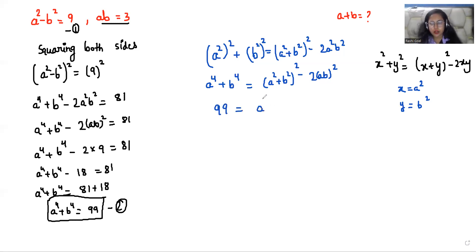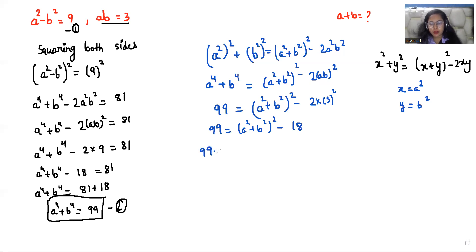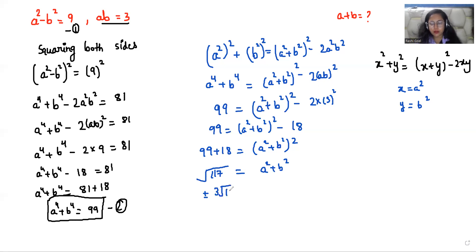I can replace a power 4 plus b power 4 with 99. So 99 is equal to a squared plus b squared whole squared minus 2 times ab squared, which is 2 times 9, giving 18. So 99 plus 18 is equal to a squared plus b squared whole squared. That gives 117. Taking the square root, a squared plus b squared is equals to plus or minus 3 root 13.